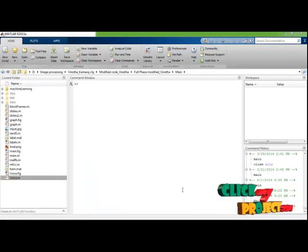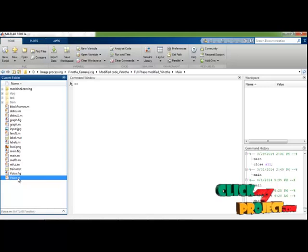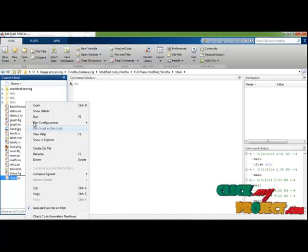This is the MATLAB command window. These are the files which we used in this process. Voice is the main function. Choose the voice file and click the run option.